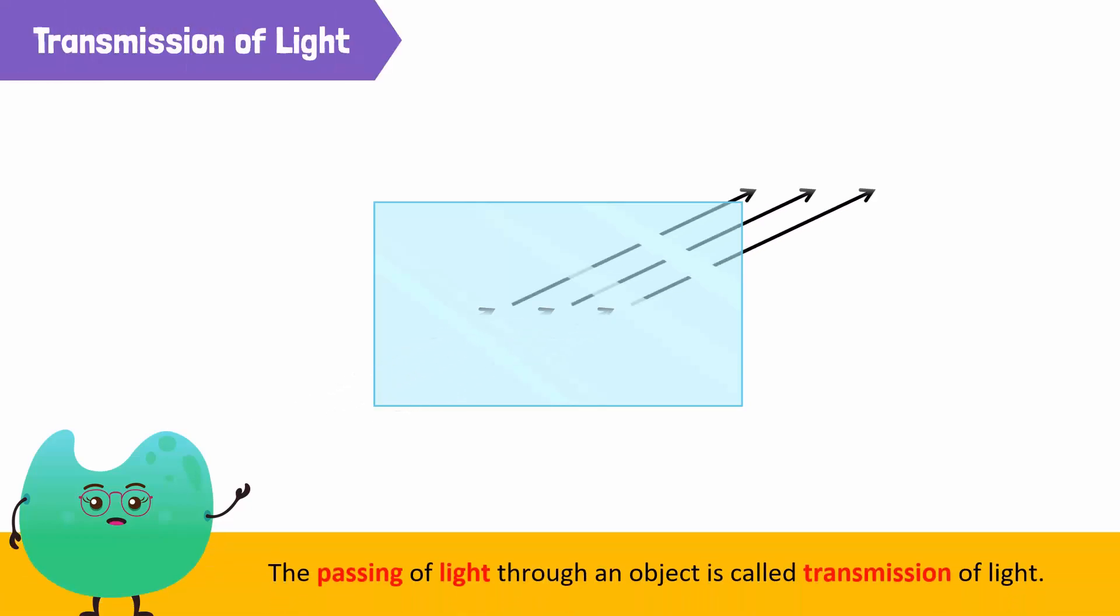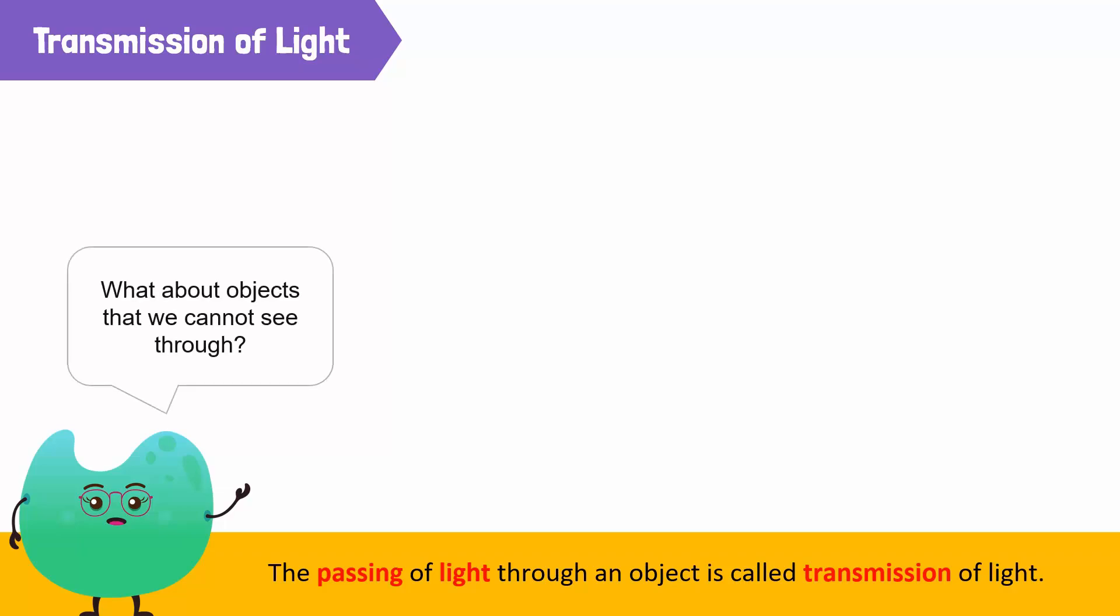This passing of light through materials is called transmission of light. Now we know that light passes through transparent objects. But what about the objects that we cannot see through?